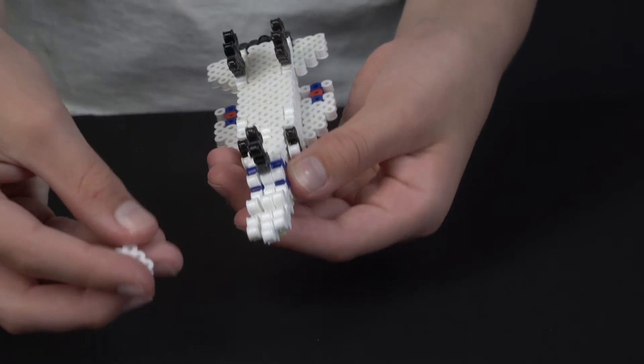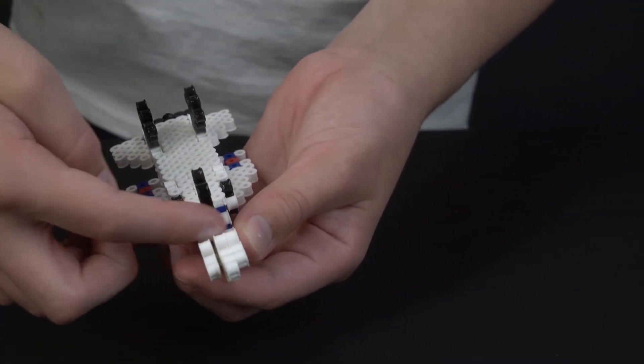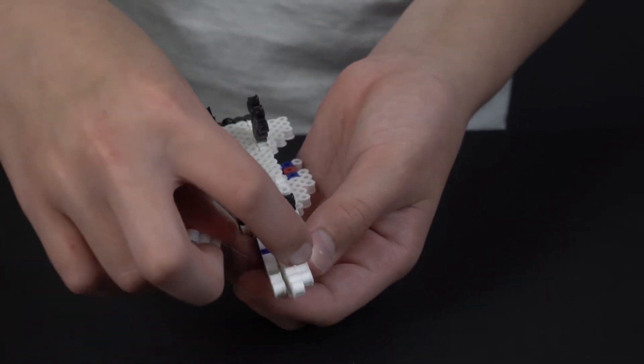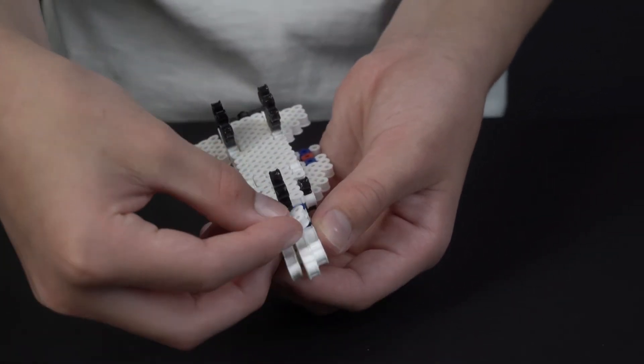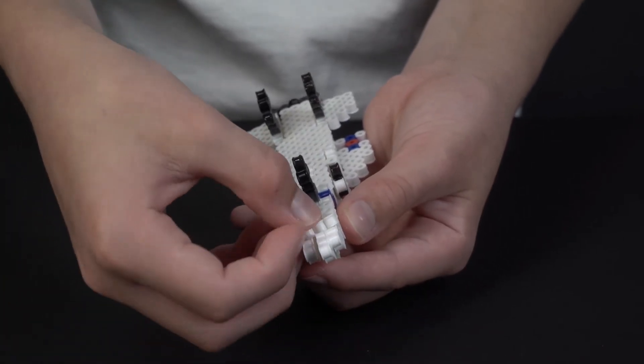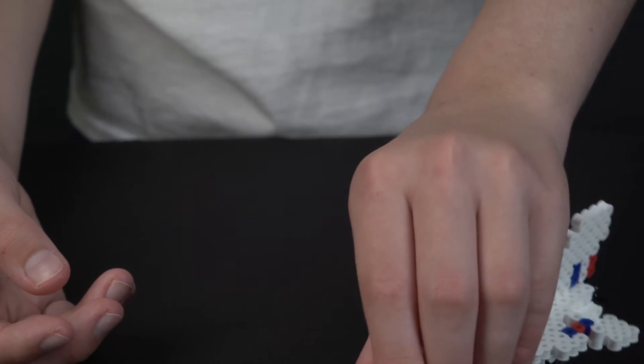And now we take both of the connectors and as you can see there's a two by three bead hole and there's a one by three. So we take the two by three piece and stick it into the back and then we take the one by three and stick it into the front. Step two is finished.